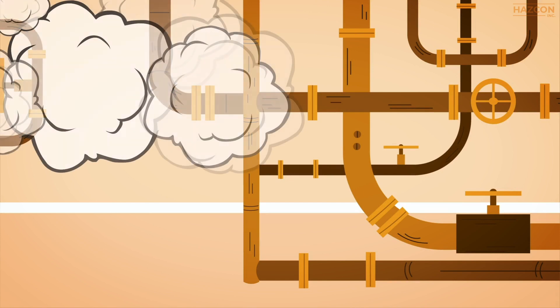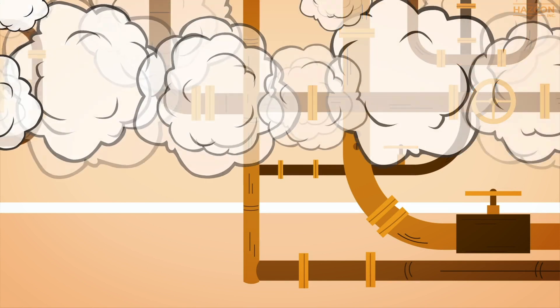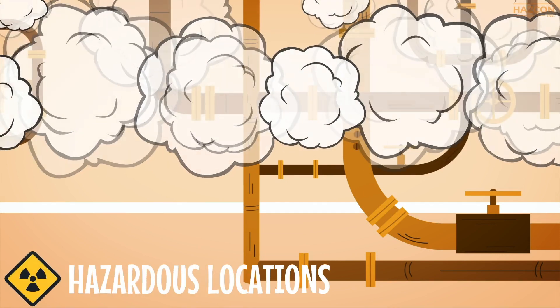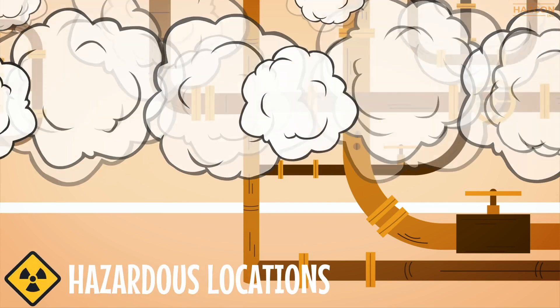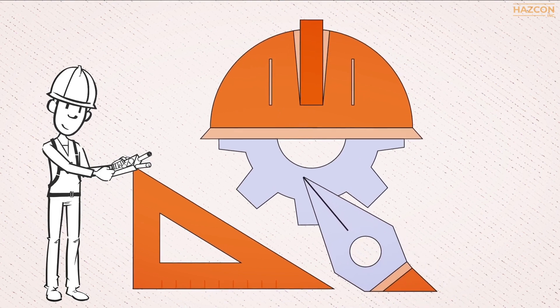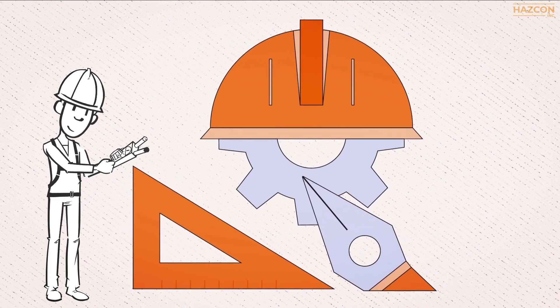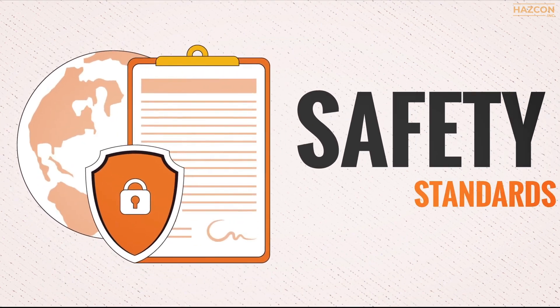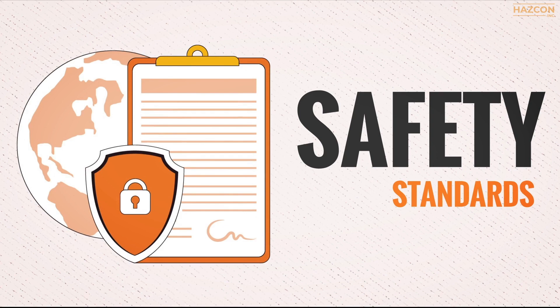Electrical equipment is often installed in locations where there are gases present, making them hazardous locations. Therefore, it is required that these products be designed and constructed in compliance with safety standards in order to be safe for use in such hazardous locations.